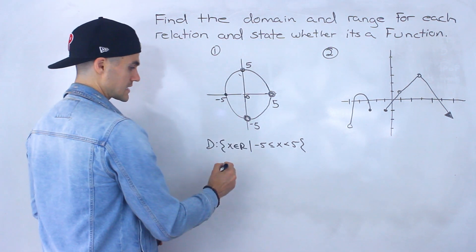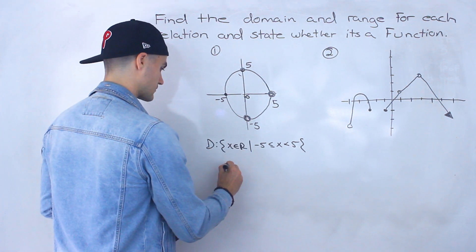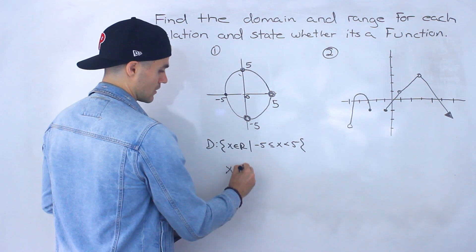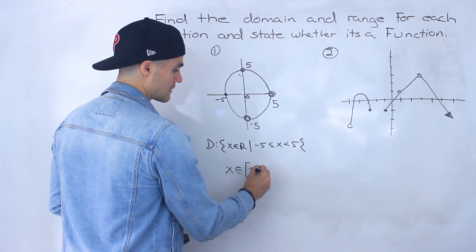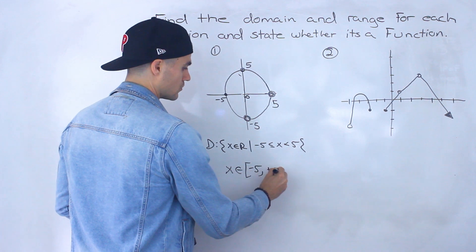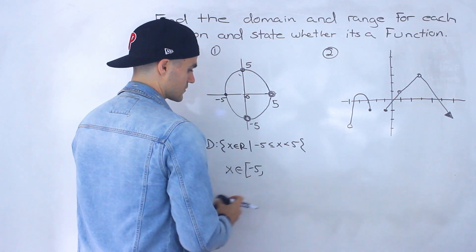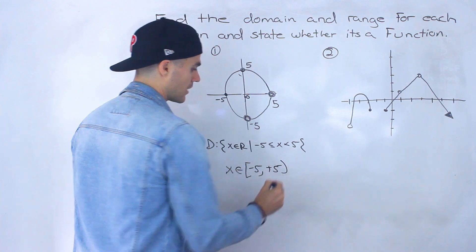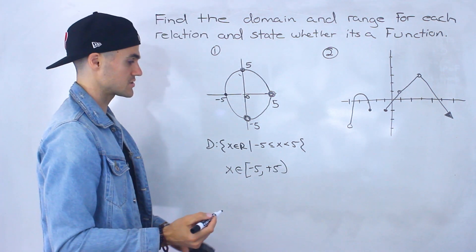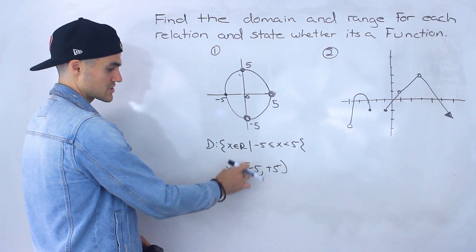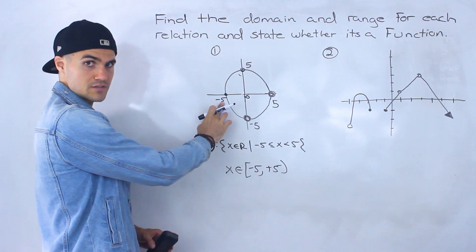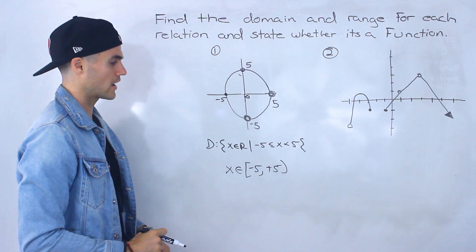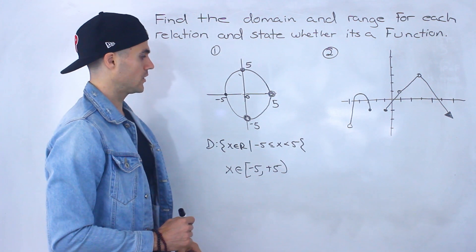In interval notation, x is an element from negative 5 to positive 5, where negative 5 has a square bracket — it's inclusive — and positive 5 has a circle bracket — not inclusive.